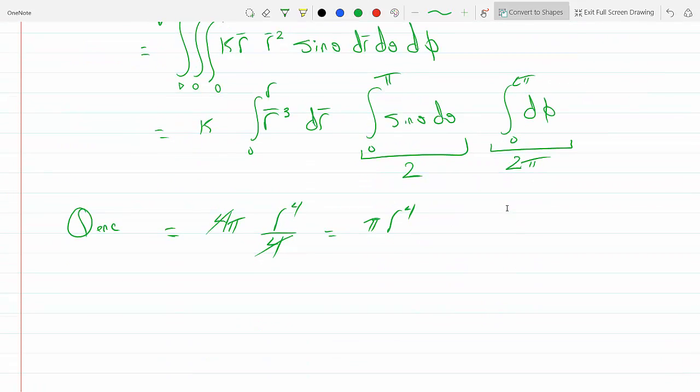And now back to Gauss's law, so ∫E·dA equals Q enclosed over epsilon. Now this is a sphere. At the surface of the sphere, dA points outwards, the vector, and E also points radially outwards.